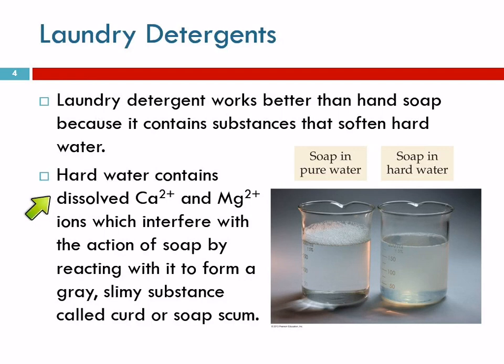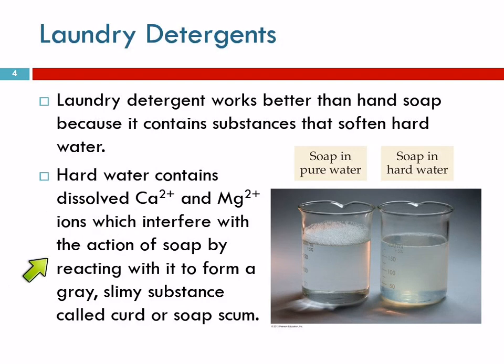That's not a bad thing — those minerals are good for you — but it does cause a problem when we wash clothes. The calcium and magnesium interfere with the action of soap; they combine with it and make a gray, slimy substance. You might have seen this scummy stuff in the washing machine, and it also builds up around the kitchen faucet and the bathtub as white, scummy hard water deposits.